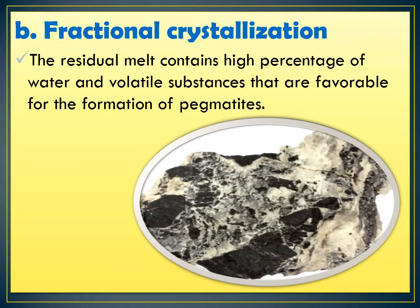When we talk about fractional crystallization, it involves high percentages of water and volatile substances that are favorable for the formation of magmatites. This means that a fraction of water and a fraction of volatile substances, when they join together, tend to create crystals or minerals. One best example is pegmatite, as you can see in the picture provided.